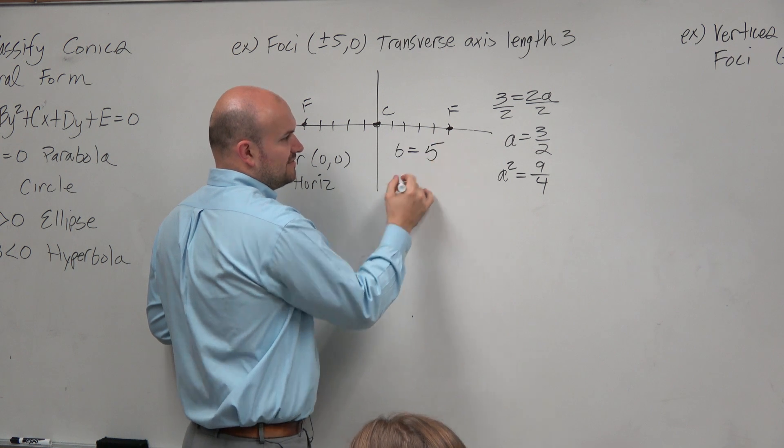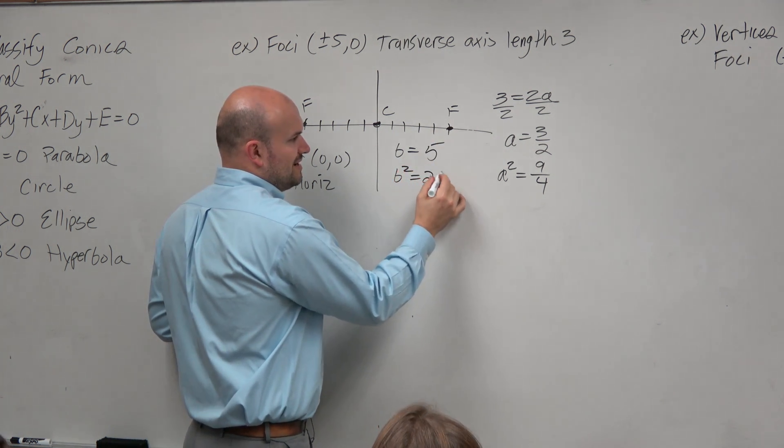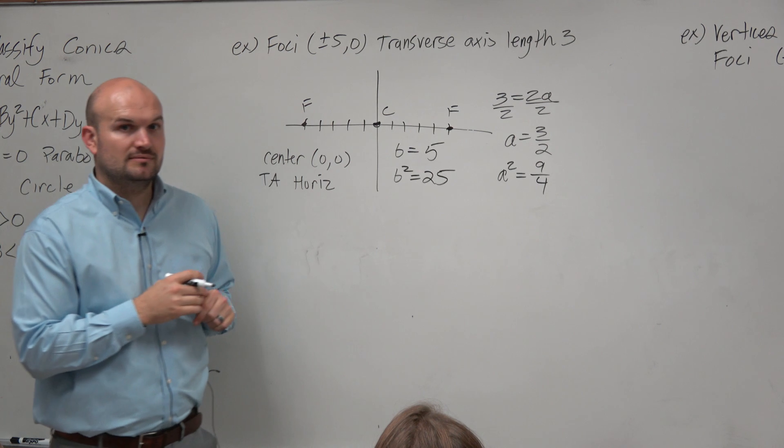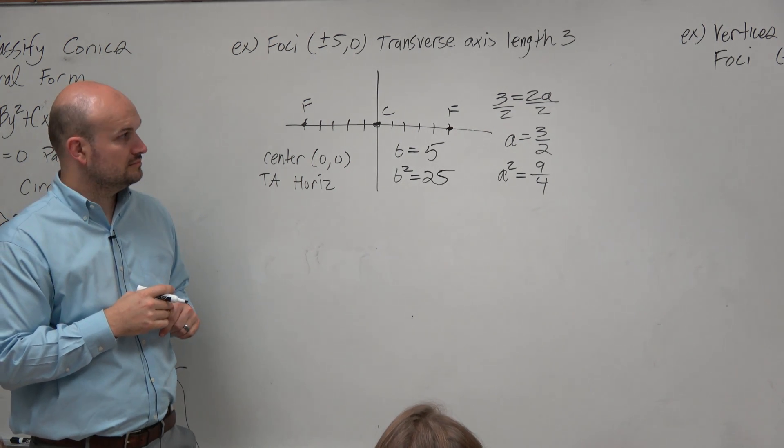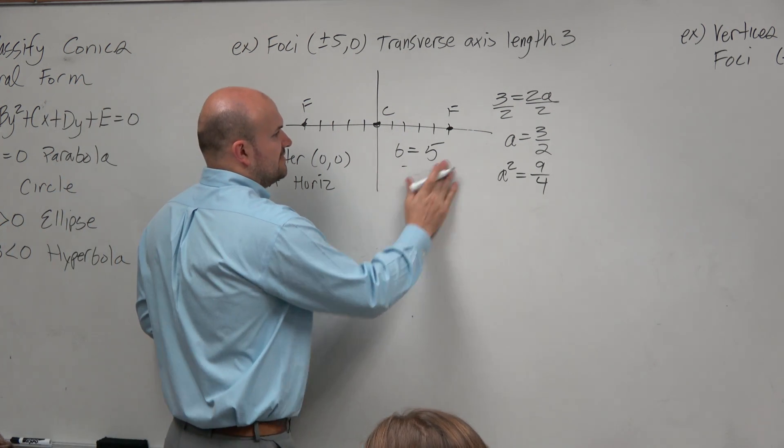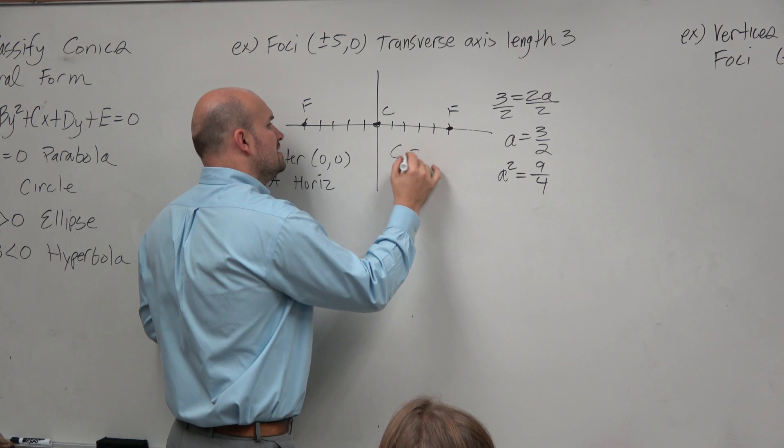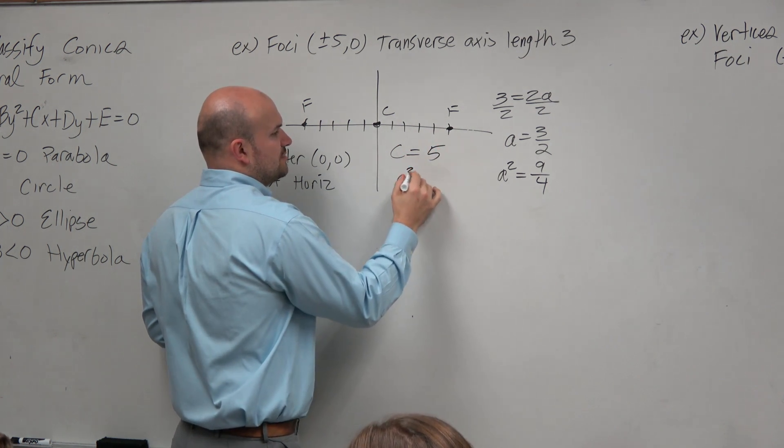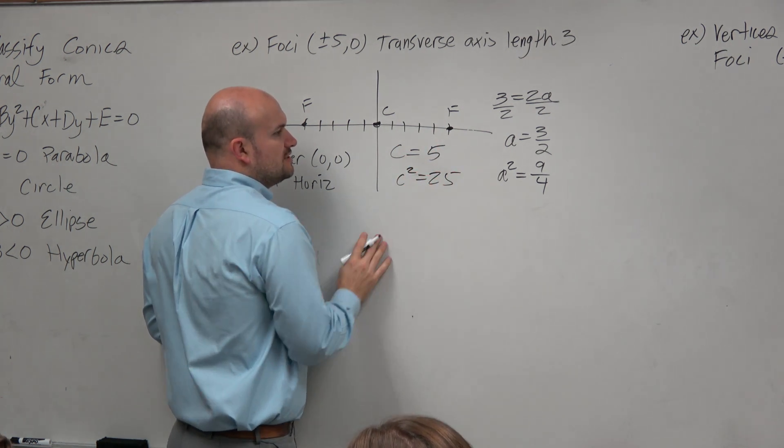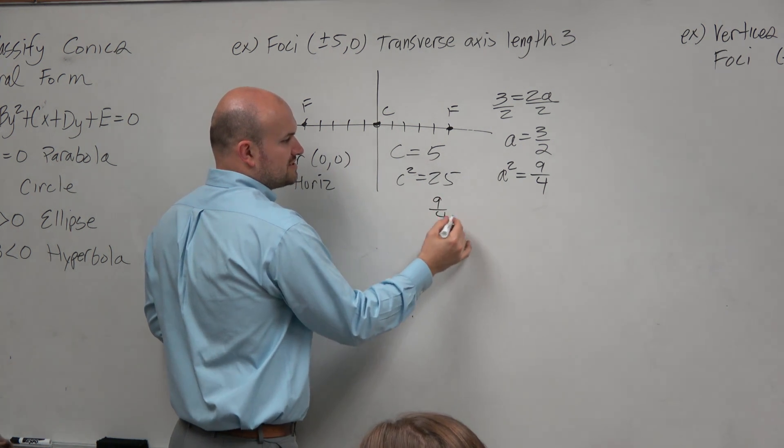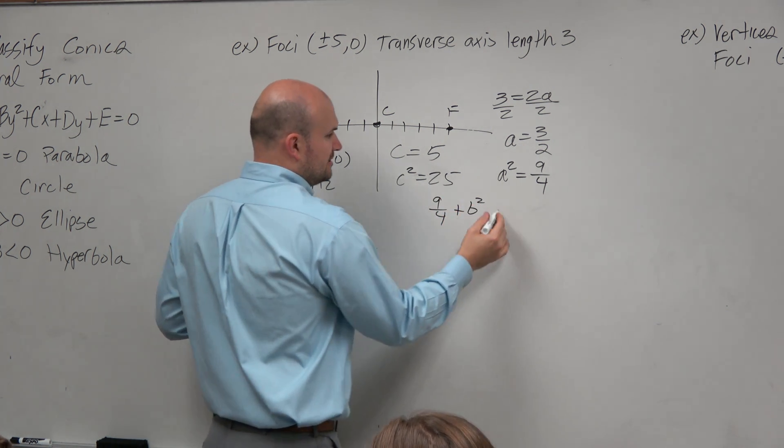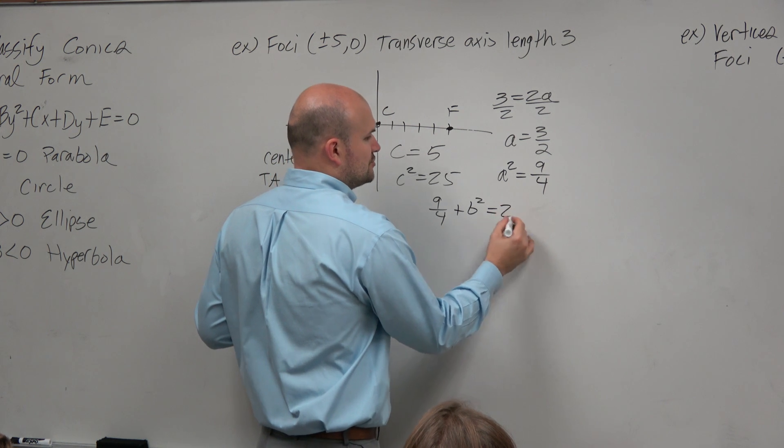b is equal to 5. So b squared is equal to 25. Wait, what? Where did you get c? I'm sorry, c, right? Sorry, thank you. Good catch. c is equal to 5. So c squared is equal to 25. So now I have the equation 9 fourths plus b squared equals 25.